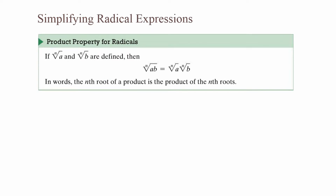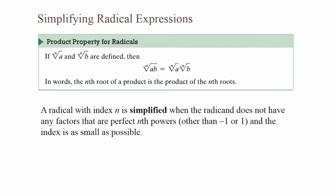Simplifying radical expressions — product property for radicals. If the nth root of a and the nth root of b are defined, then the nth root of a times b is equal to the nth root of a times the nth root of b. In words, the nth root of a product is the product of the nth roots. A radical with index n is simplified when the radical does not have any factors that are perfect nth powers other than negative one or one, and the index is as small as possible.